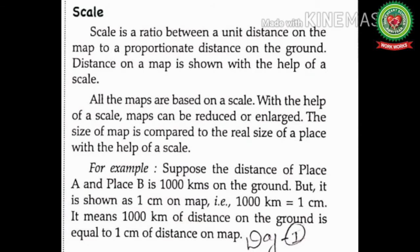The next component of map is Scale. Scale means a ratio between actual ground distance and map distance. Scale is a ratio between a unit distance on the map to a proportionate distance on the ground — proportionate means relevant. Distance on a map is shown with the help of a scale, and all maps are based on a scale. Why do we need a scale on a map? The scale shows you how to measure the distance between features shown on the map. Without a scale, a map is just a line art.